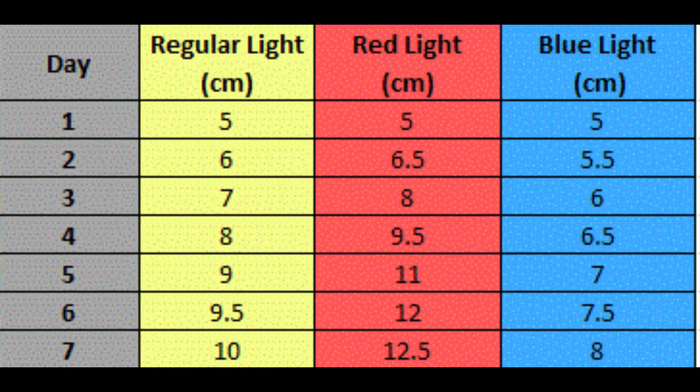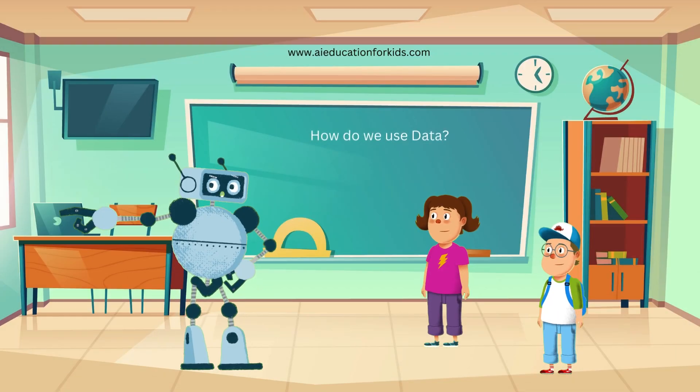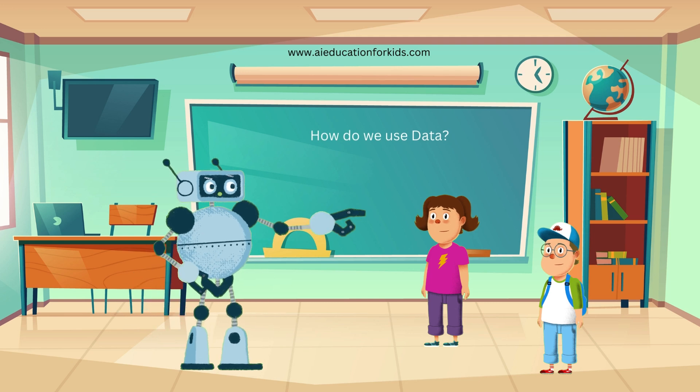This chart shows the height of each plant over the week. For example, on day 1, all plants are 5 cm tall. By day 7, the regular light plant is 10 cm, the red light plant is 12 cm, and the blue light plant is 8 cm. Wow, we have a lot of numbers now. I get it — the red light plant grew the most. That's right, Ethan. By looking at the data, we can conclude that the red light helped the plant grow the tallest. This is how data helps us make decisions and learn new things, whether it's in science, math, or even what food we like.